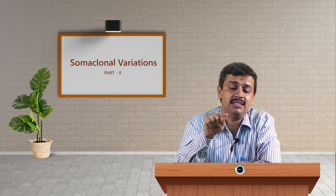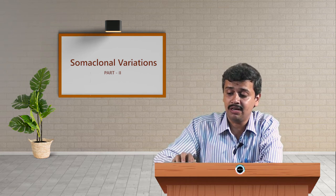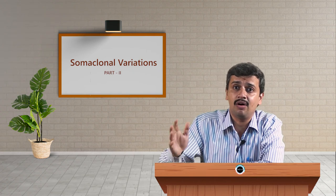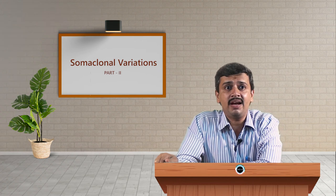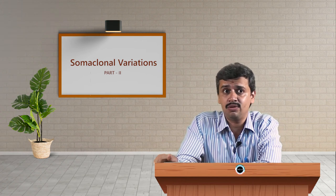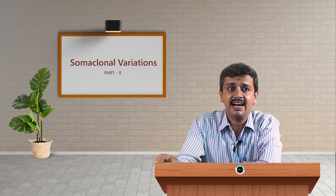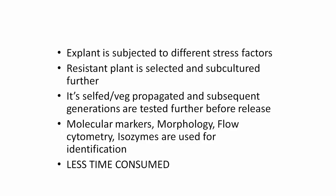This becomes an advantage. This might have shortened the breeding cycle, which otherwise might have taken several years or even several decades. The explant is subjected to different stress factors. The resistant plant is selected and subcultured further. When the plant has been exposed to a very low stress level, you can subculture them, and during the subculture process you can increase the concentration of the same aluminum, which actually hardens or makes the plant resistive against the same stress molecule.